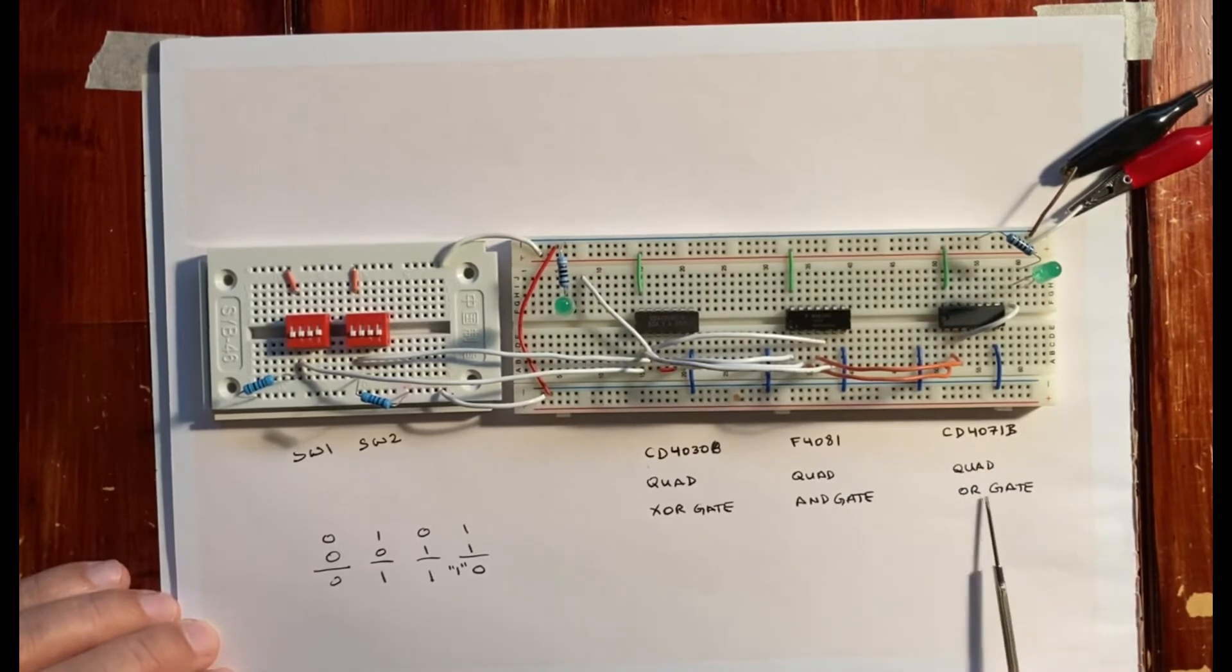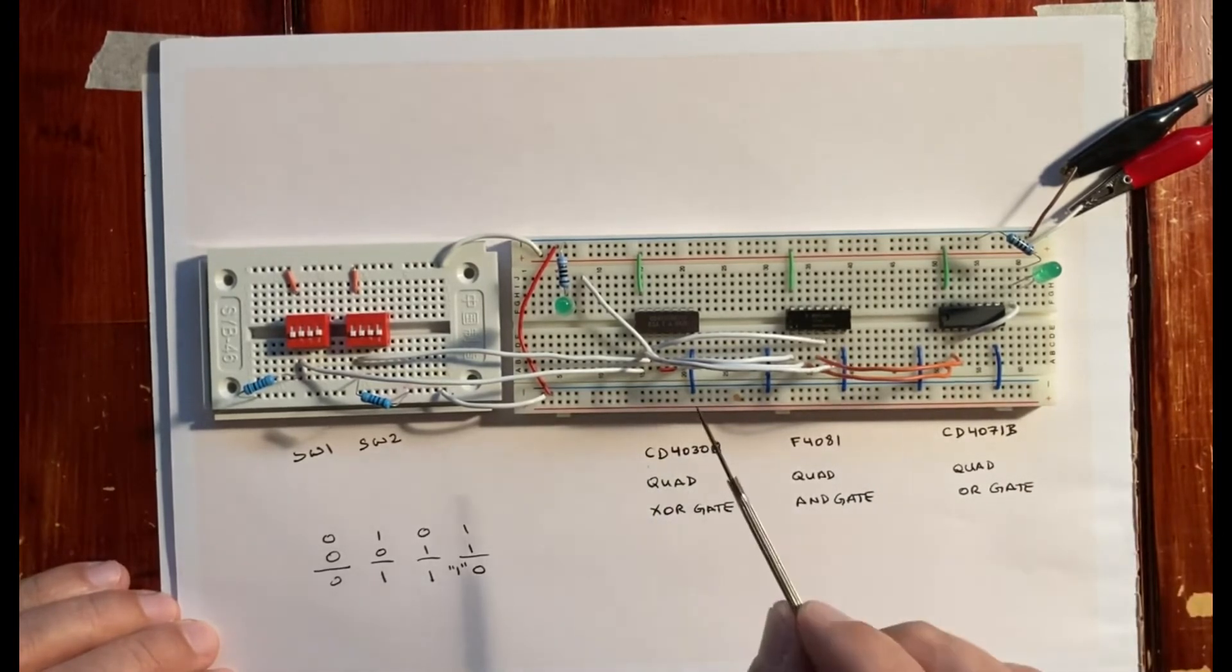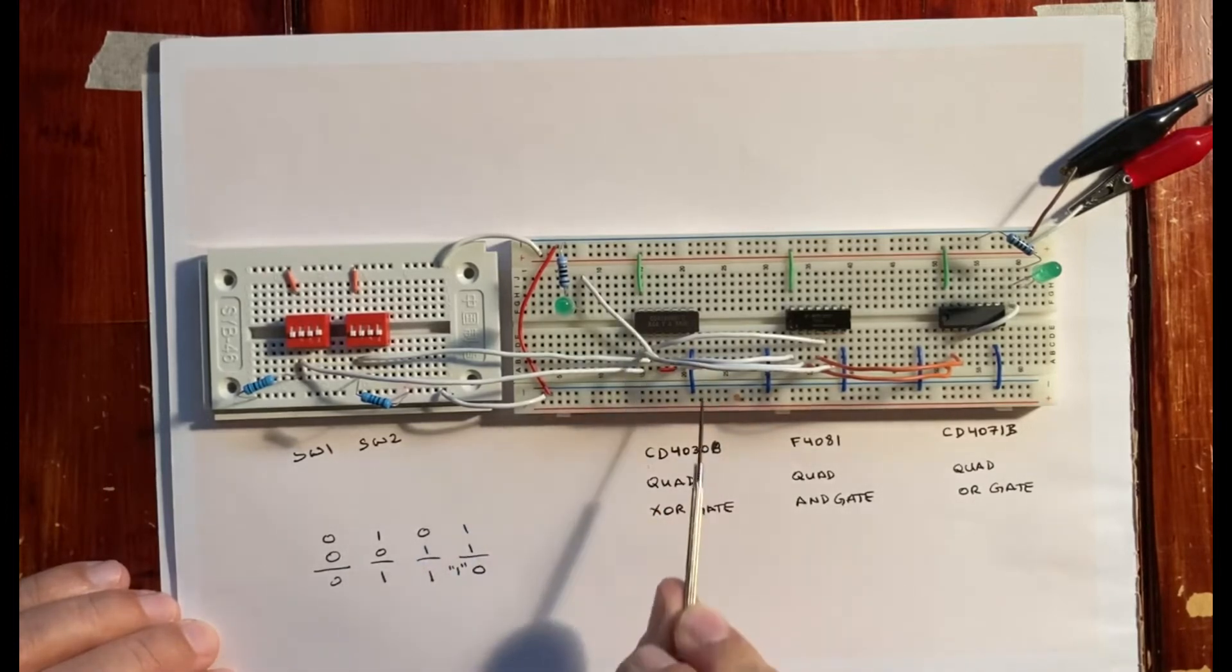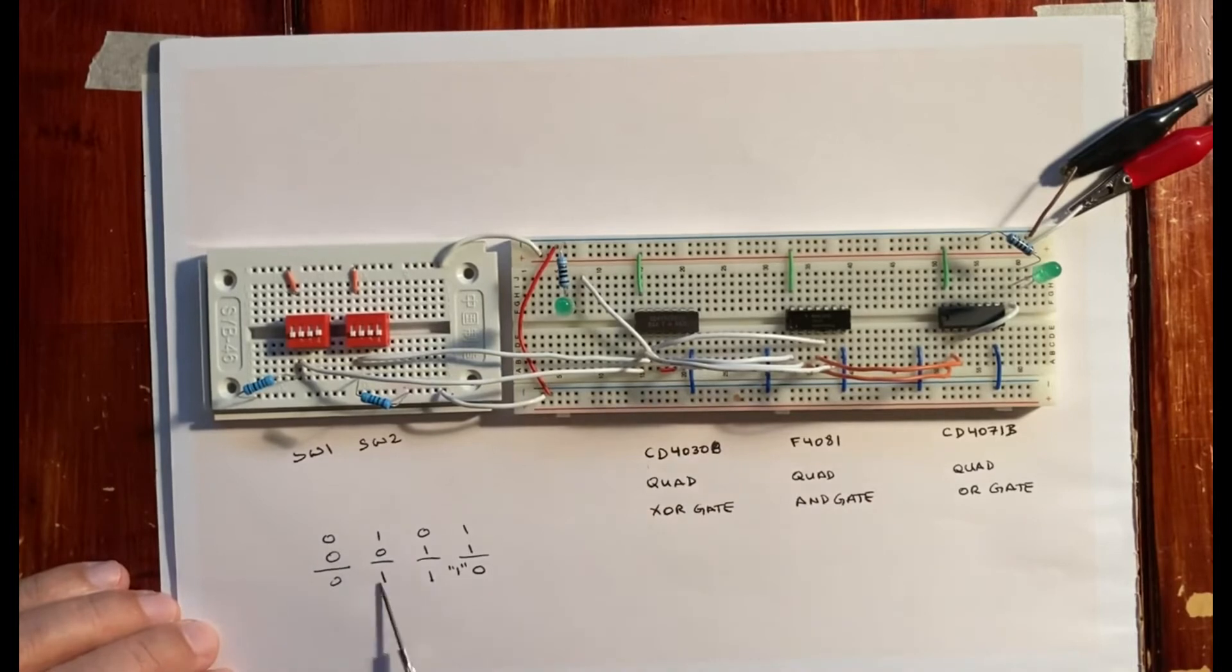What quad means is that in this chip there are four OR gates, in this chip there are four AND gates, and in this chip there are four XOR gates. So we power the chip here and feed it to ground here, here, and here. At this point now we've done the wiring.